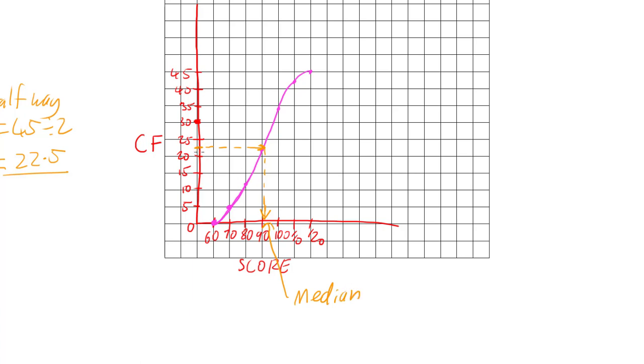Because we've approximated by finding halfway here, we go across, and the graph then tells us when we come back down where we want to be.